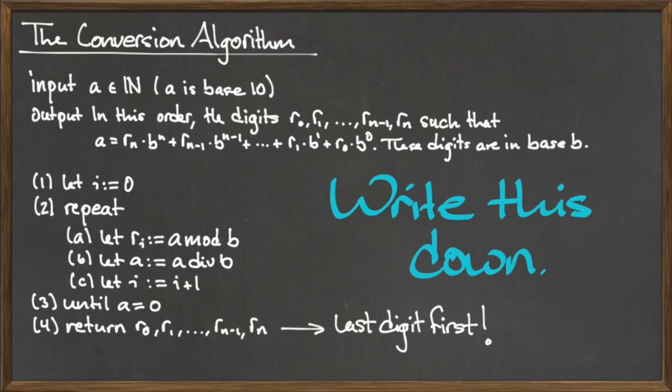Next, we redefine the variable a and assign it the value a div b. Finally, we increment the value of i by 1.